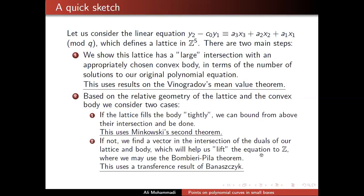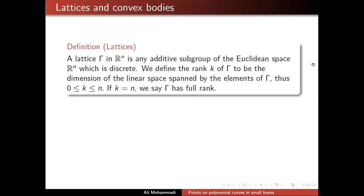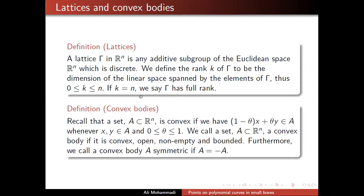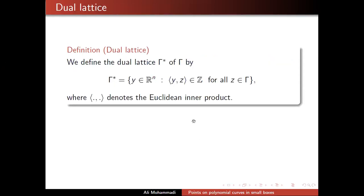So there are O(1) choices for t, and for each fixed t we can now use Bombieri-Pila — this is called the lifting technique because we have brought our equation to Z. Now I'll give definitions: a lattice is a discrete subadditive subgroup of Euclidean space ℝⁿ; its rank is defined by the dimension of the linear space it spans. In this talk we will almost exclusively talk about lattices of full rank. A convex body is a set inside ℝⁿ that is convex — meaning the line connecting any two points stays inside the set — and it is open, bounded, and symmetric if A equals −A.